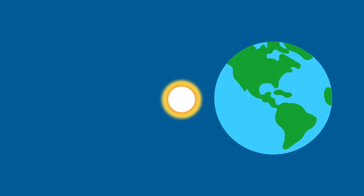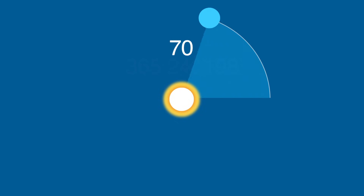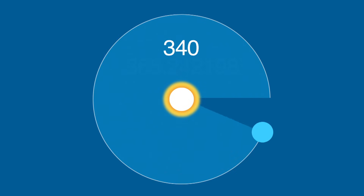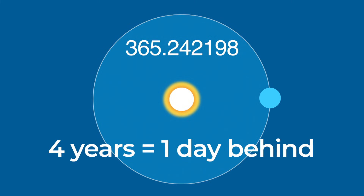The Gregorian calendar is based on a solar year — how long it takes the Earth to go around the sun. It actually takes a little more than 365 days for us to make a full trip around the sun, almost a quarter of a day more. So we end up falling a day behind schedule every four years.